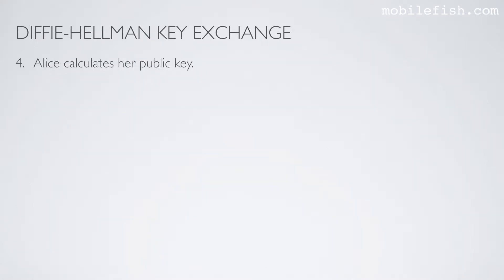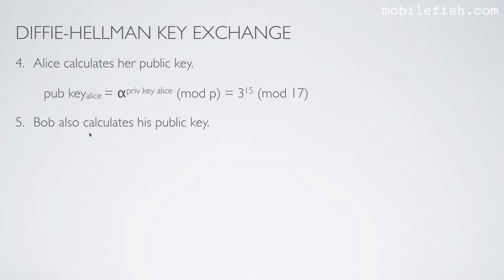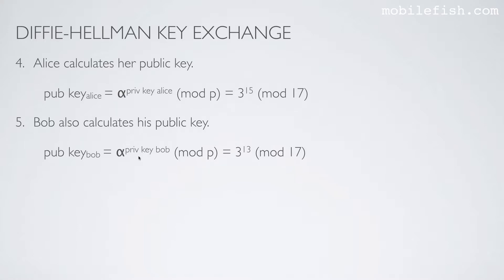Step 4. Alice calculates her public key. She uses her private key as an exponent using this equation. Step 5. Bob calculates his public key. Bob uses his private key as an exponent, as you can see in this equation.